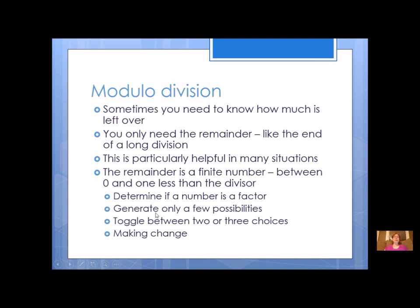Here's some reasons why you might need modulo division. You want to determine if a number is a factor of another number. So if the modulo is zero, it's a factor, and if it's not zero, it's not a factor. You might want to generate only a few possibilities. Like I mentioned before, if I'm dividing by five using modulo division, I only have five possibilities. So I can get a random number, or get something from the user, and using modulo division, I can narrow anything down to just a few possibilities.